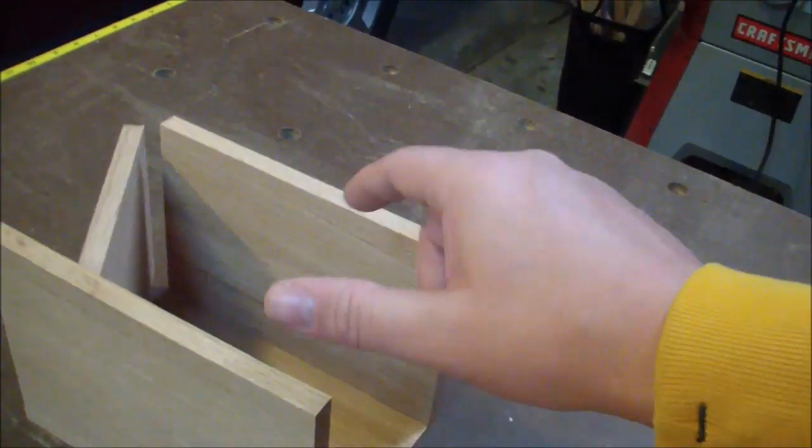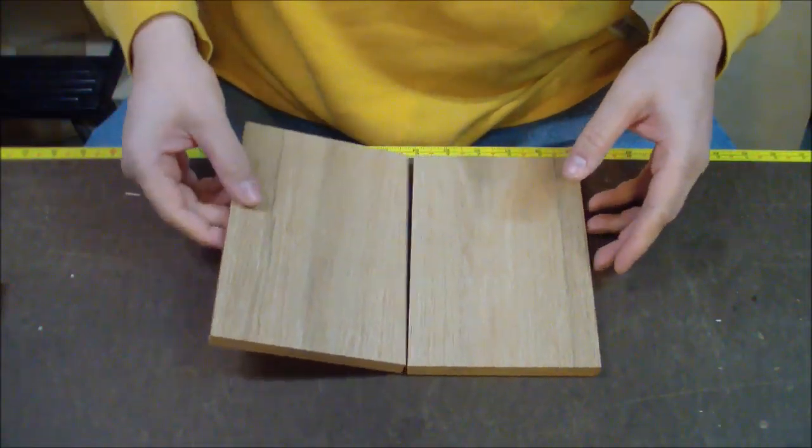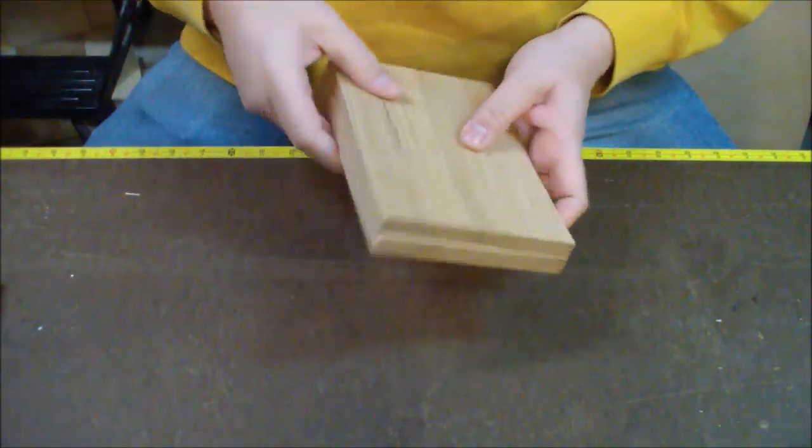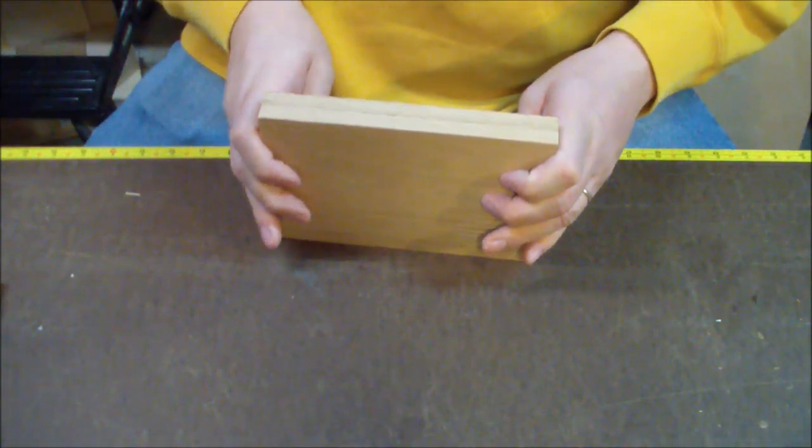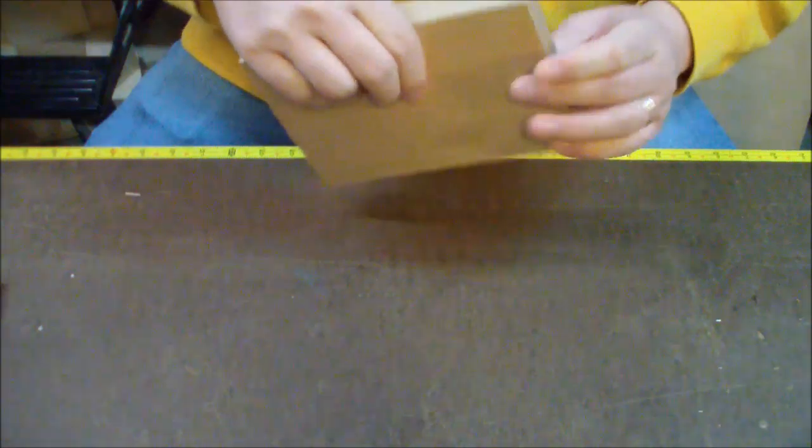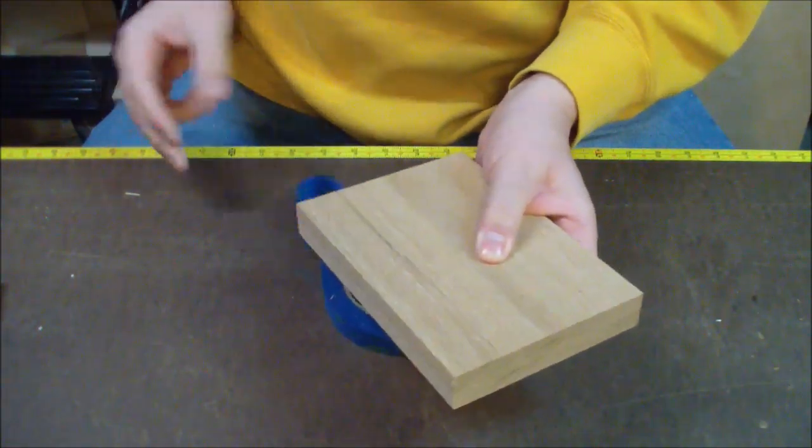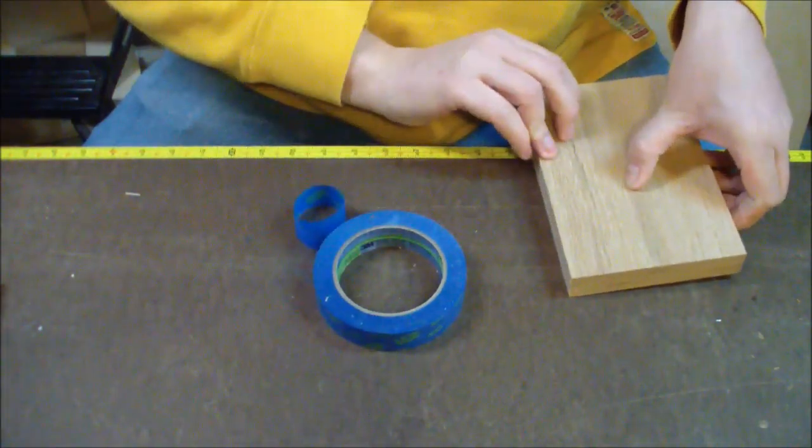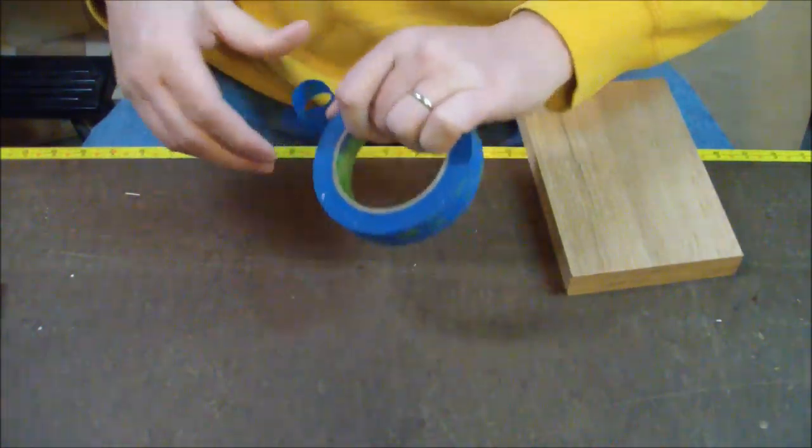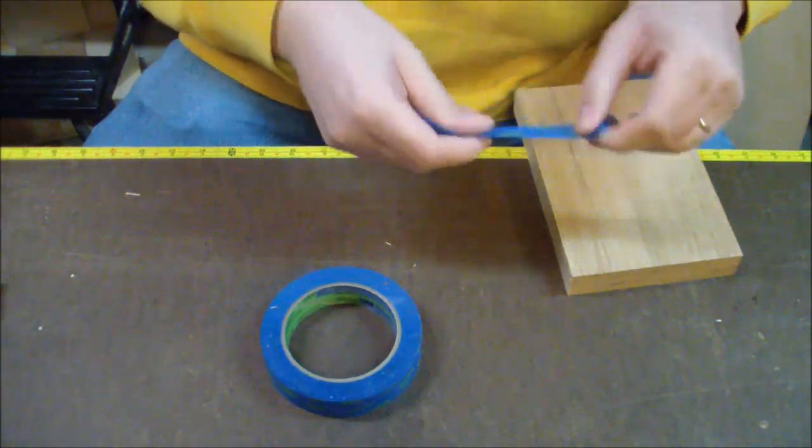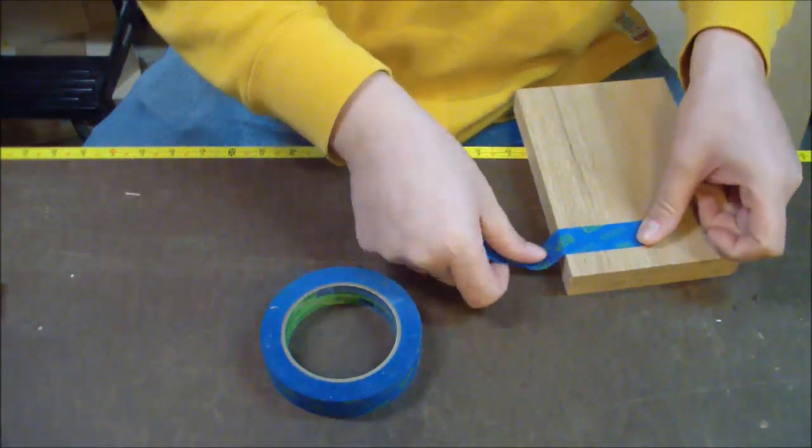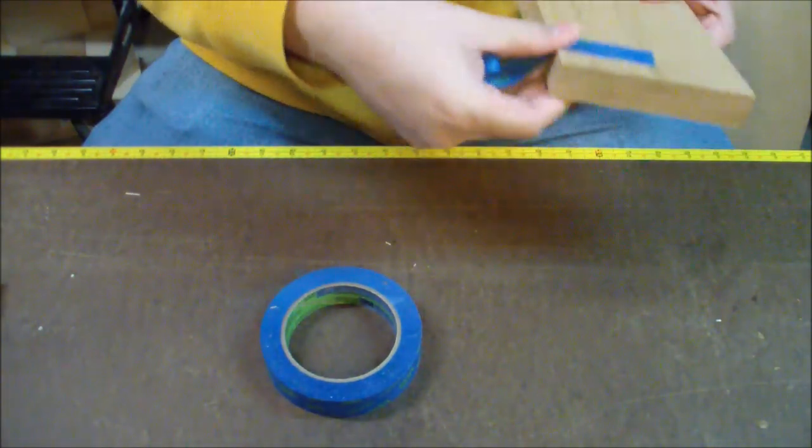Before I head over to the bandsaw, I just want to show a little trick that I like to do. I take both sides, if you're going to be making an identical cut, you just line these up and just use some tape. Some people like double stick tape, that might actually work a little bit better. I prefer painters tape, it's just cheaper and it's easier to take off.